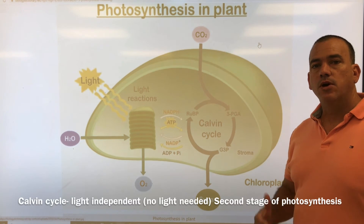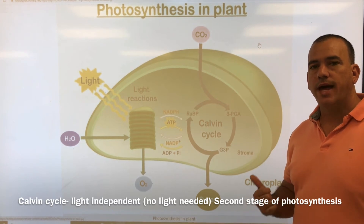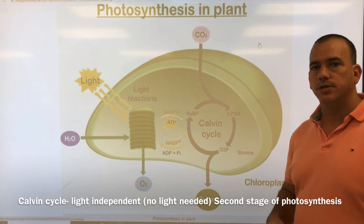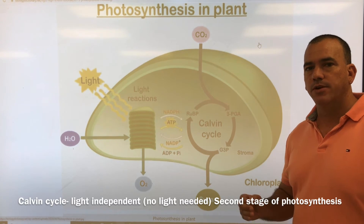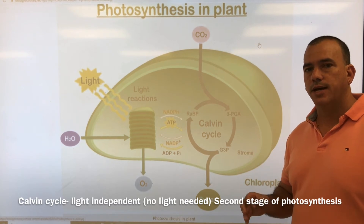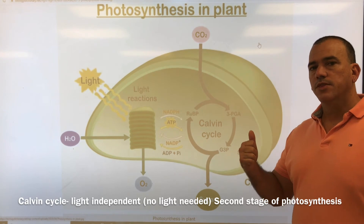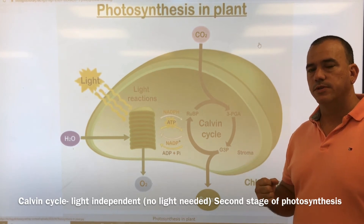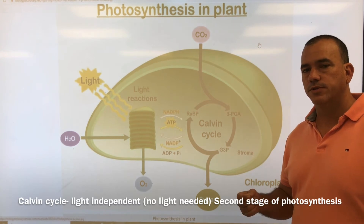The next word is the Calvin cycle, also called the dark reaction — meaning no light is needed. You can also call it the light-independent reaction; it means the same thing. Calvin cycle, dark reaction, light-independent reaction — no light needed. Also write down that the Calvin cycle is the second step in photosynthesis. The light reaction has to happen first, and then after that you go to the Calvin cycle.